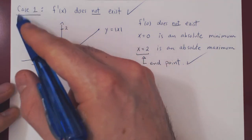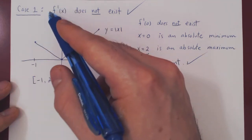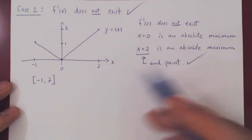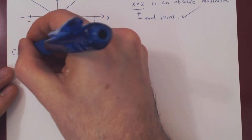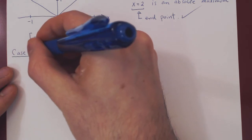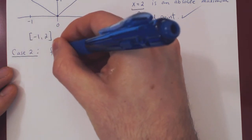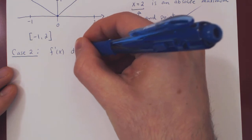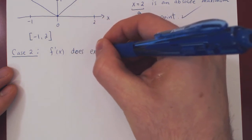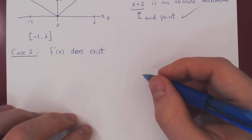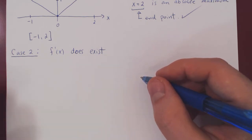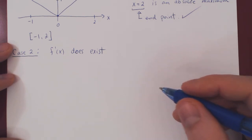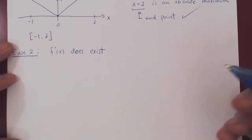Points where the derivative is undefined are important, and endpoints of the interval are important when looking for a max or minimum value. Now let's look at the only other possibility: where the derivative does exist. We have three possibilities: the derivative is positive, negative, or equal to zero.